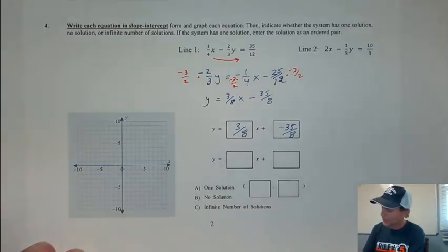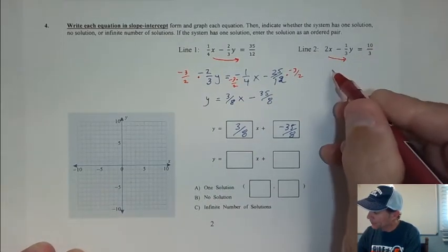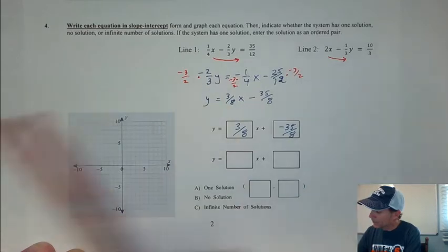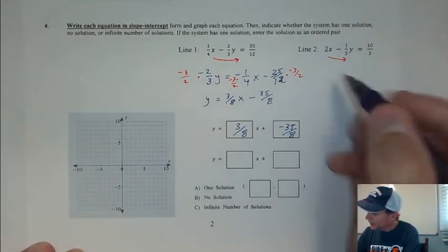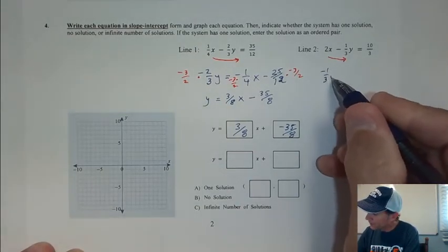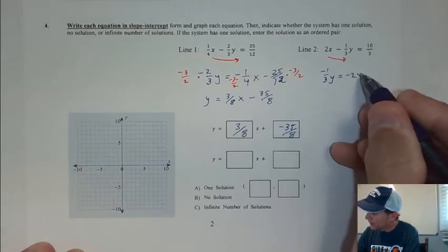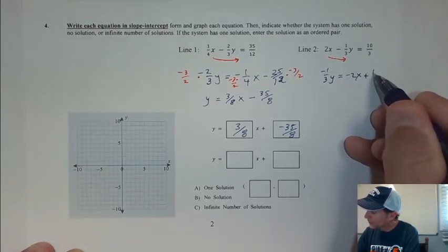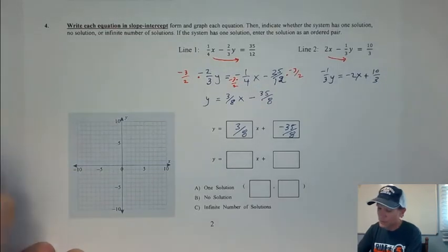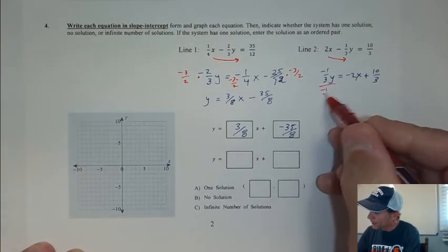But I'm going to finish changing these into slope-intercept form, and then we're going to look at it in Desmos. So here I'll move the 2x over. So here I get negative 1 third y equals negative 2x plus 10 thirds. And then I'm going to do the division method here, because some of you prefer that.